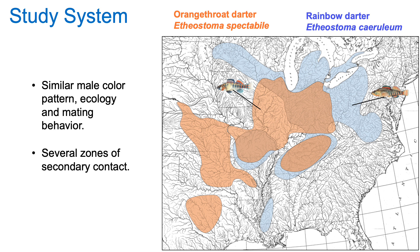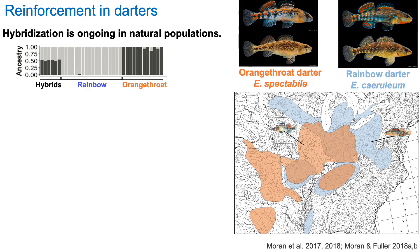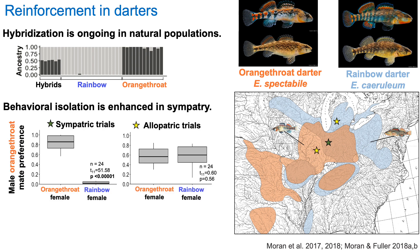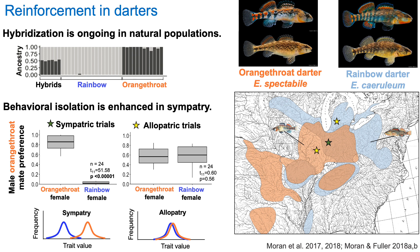My dissertation research investigated the role of reinforcement in speciation in darters. Darters are a highly diverse group of North American streamfishes — there are currently over 250 species in North America. My work focuses on two wide-ranging species: the orange-throat darter, Etheostoma spectabile, and the rainbow darter, Etheostoma caeruleum. These species have similar male color pattern, ecology, and mating behavior, and there are several zones of secondary contact between them. I found that hybridization is ongoing in natural populations, and that behavioral isolation is enhanced in sympatry compared to allopatry — male orange-throat and rainbow darters have strong preferences for females of their own species in sympatry, but such preferences are absent in allopatric populations, giving us a striking pattern of character displacement.